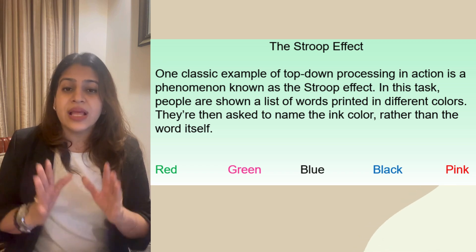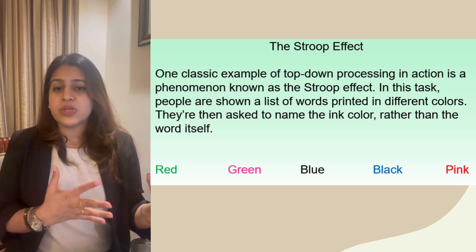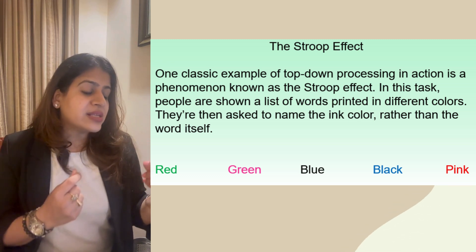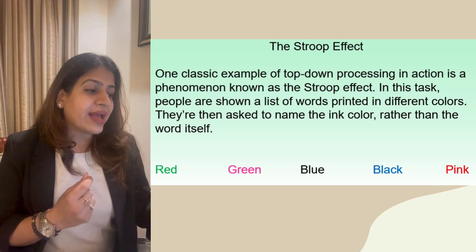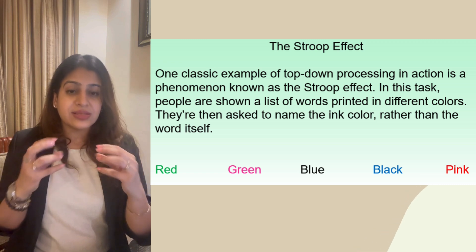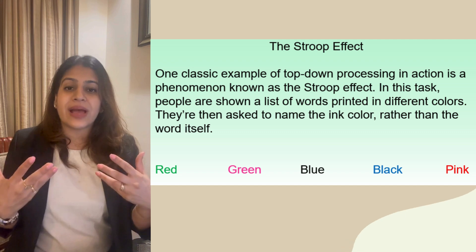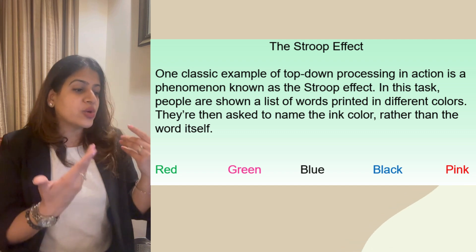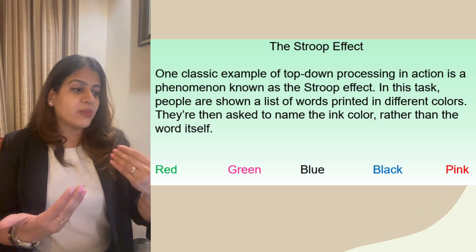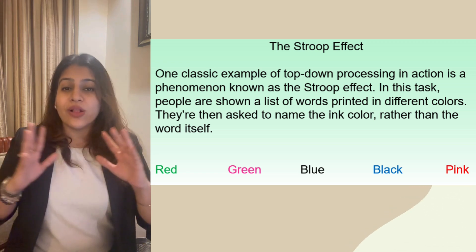A very famous example of top-down processing is the Stroop Effect. Let me show you some words here. In this picture you can see words like red, green, blue, black, and pink. Whatever the word says, it is written in a different color — for example, 'red' is written in green, 'green' is written in pink, 'blue' is written in black, 'black' in blue, and 'pink' in red.